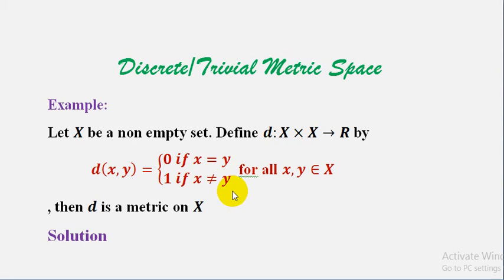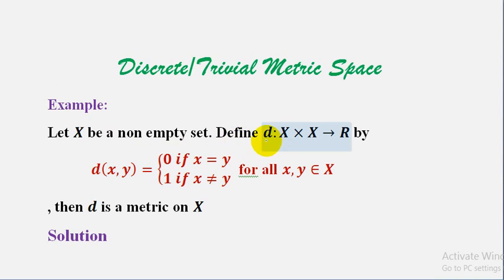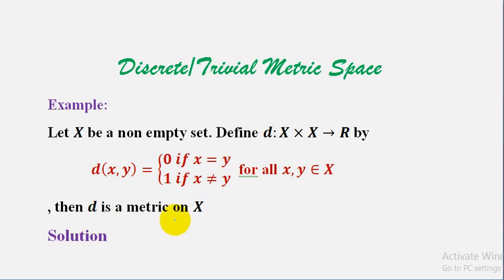Welcome students, I am Muhammad Naveed and you are watching my YouTube channel. In this video lecture we are going to discuss an example of a metric space, which is basically the discrete or trivial metric. Let x be a non-empty set. Define d from x cross x to R by d(x,y) = 0 if x equals y, and d(x,y) = 1 if x is not equal to y, for all x, y belonging to x. Then d is a metric on x, and this metric is called the discrete metric.